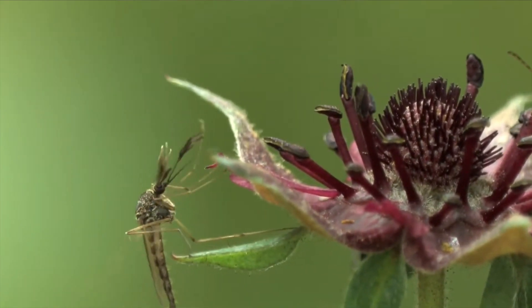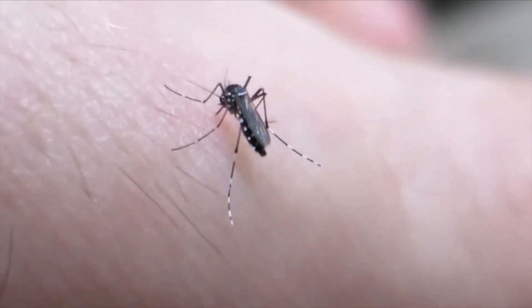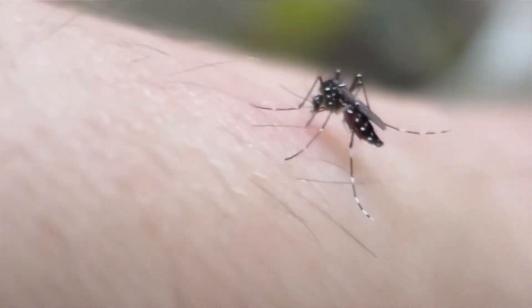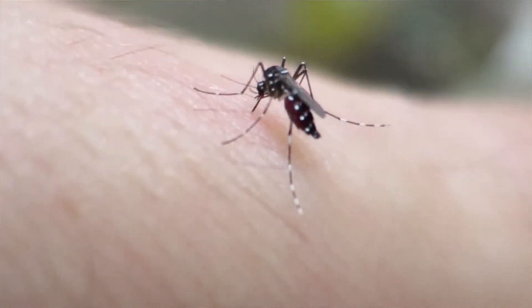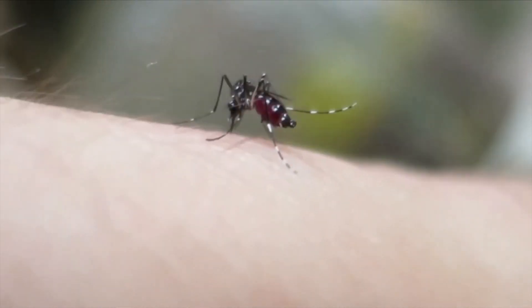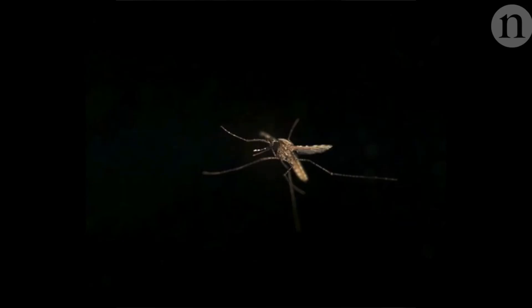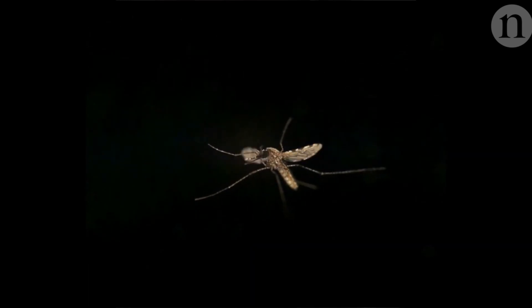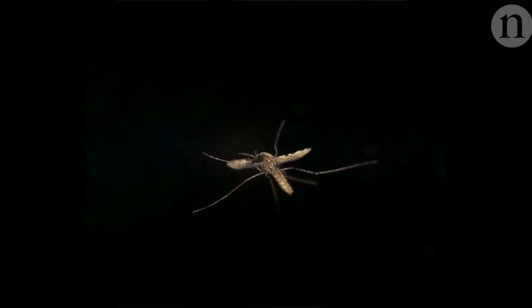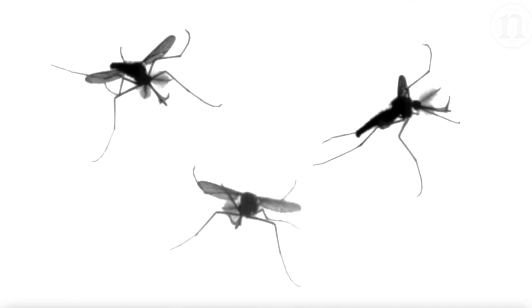The airborne adult mosquitoes feed on plant nectar for energy, but females require a blood meal in order to produce eggs. If the mosquito bites a person infected with malaria, she can draw the parasite along with her blood meal. Over the course of about a week and a half, the parasite reproduces and travels from the mosquito's gut into her salivary glands, at which point she is infectious to the next person she bites.